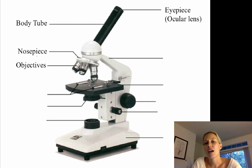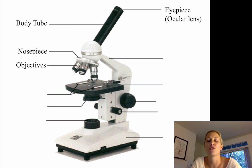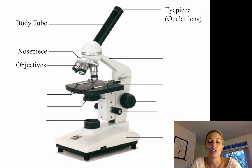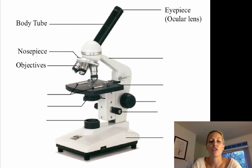Sometimes you'll find a fourth objective lens on a compound light microscope and it will be labeled oil. This is an oil immersion objective lens, which you would use in conjunction with a particular type of oil in order to increase your magnification even more.